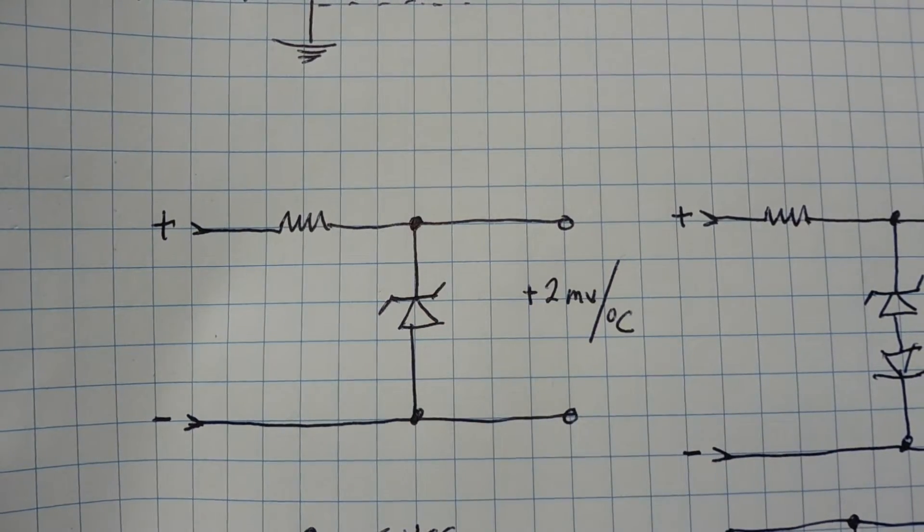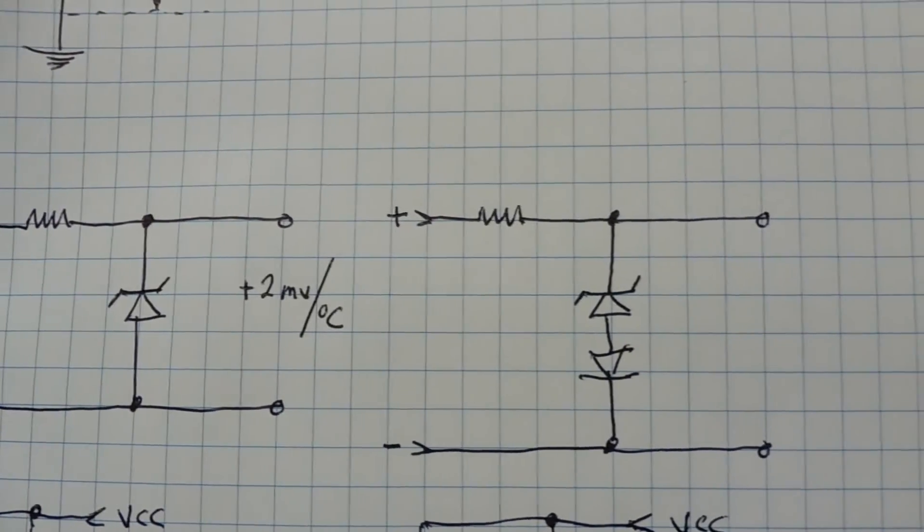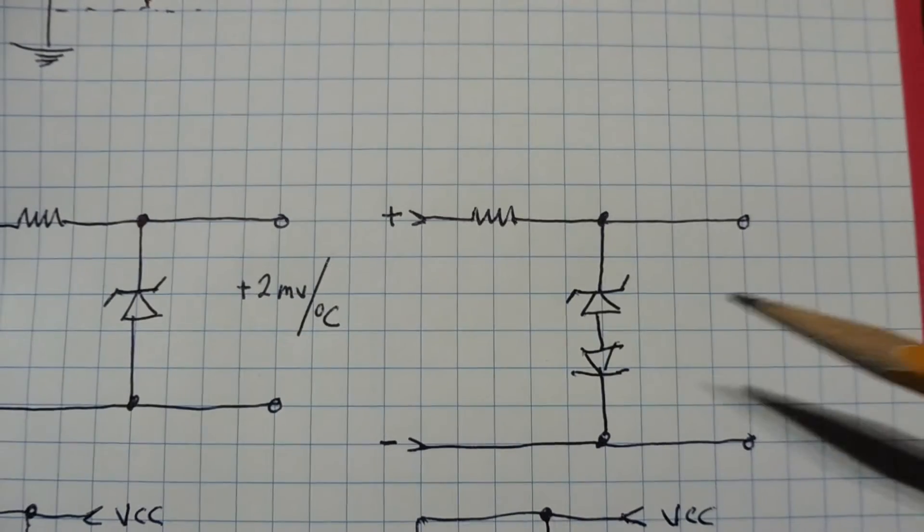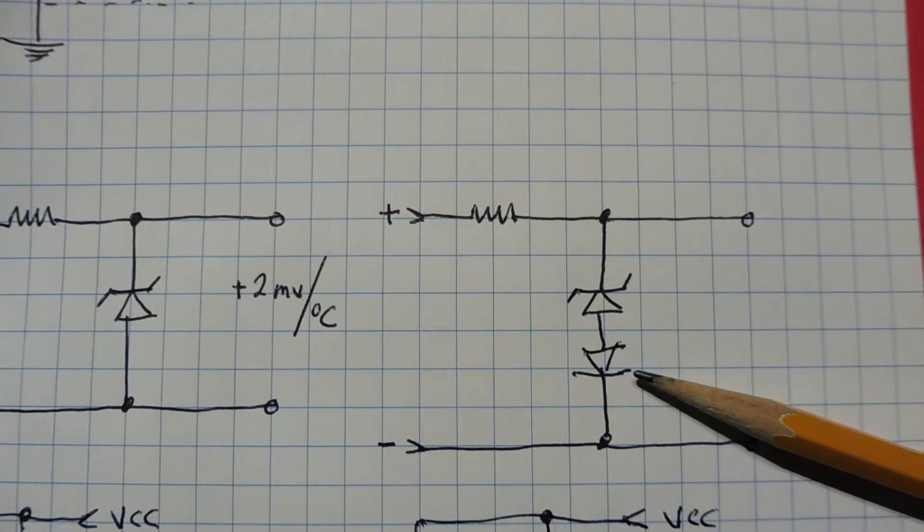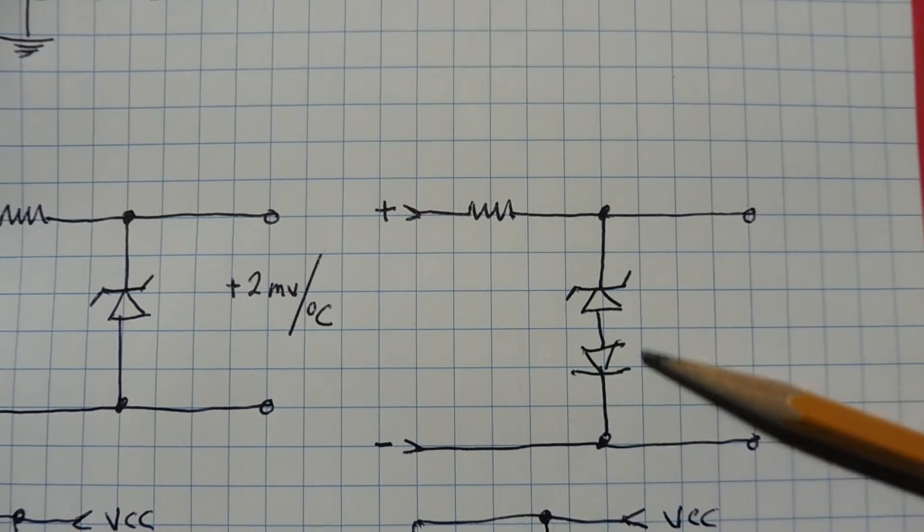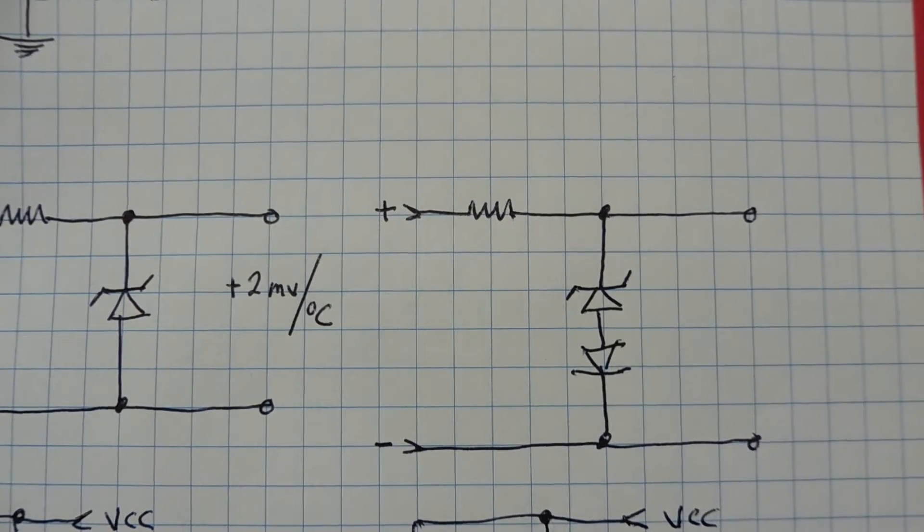If we take this circuit and add a diode into the circuit, the Zener diode will increase 2 millivolts per degree Celsius and the forward biased diode will decrease 2 millivolts per degree Celsius. They'll cancel each other out, giving us a temperature compensated circuit.